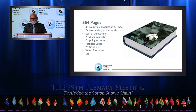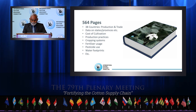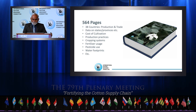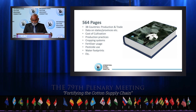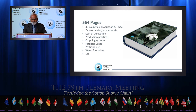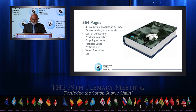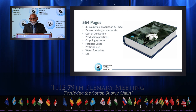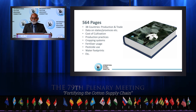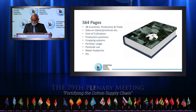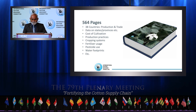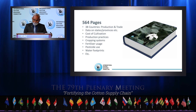The ICAC Cotton Data Book has 564 pages of numbers and graphs. It covers production practices and trade of 38 countries, with data on individual states of each of these countries. The book has details on economics of cotton cultivation and production. It describes components of production practices on seed processing, planting, nutrient management, weed management, water management, insect pest management, disease management, harvesting methods, ginning, etc. The Data Book also describes cropping systems, fertilizer usage, pesticide usage, water footprints, and much more.